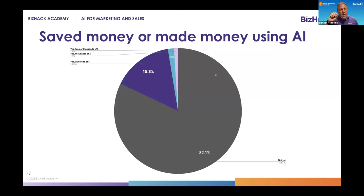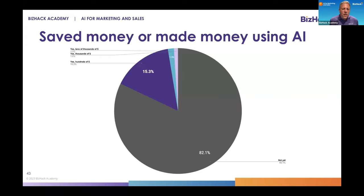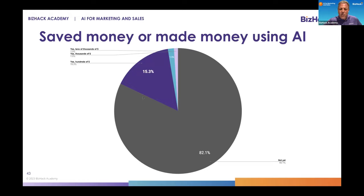Have you saved or made money using AI? On a personal level, I've saved tens of thousands of dollars — all related to translating one of my courses from English to Spanish, cutting the translation service fee by more than half. 15% of you have saved hundreds of dollars, 1.5% have saved thousands. Most of you haven't yet saved or made money using ChatGPT. I genuinely believe that if you leverage these tools correctly and consistently, you will save or make money by saving time, increasing quality, or doing more than you could normally.